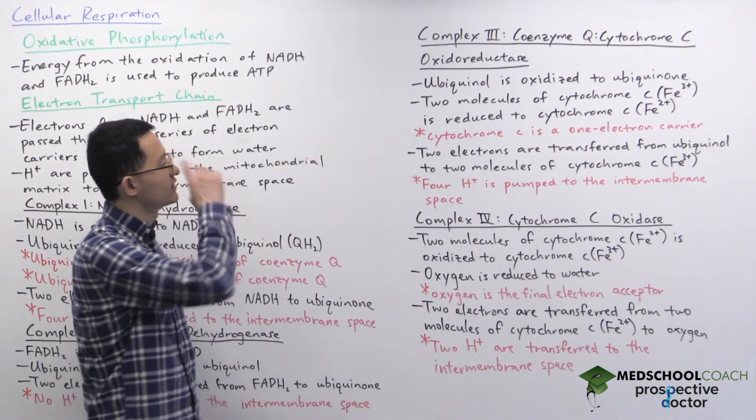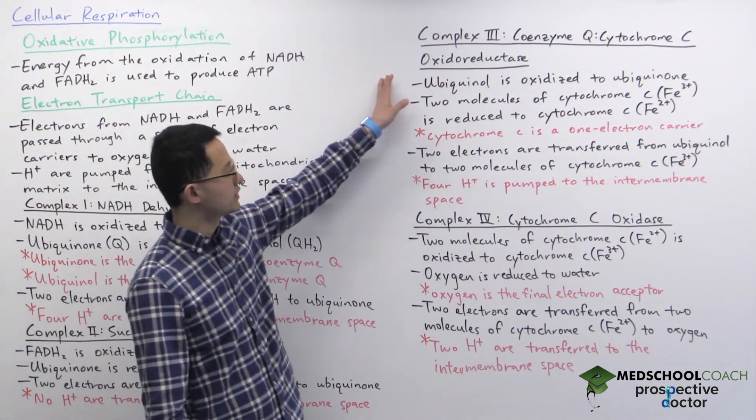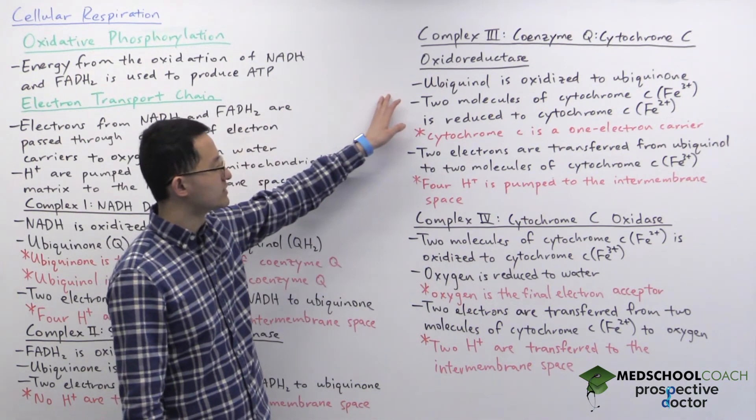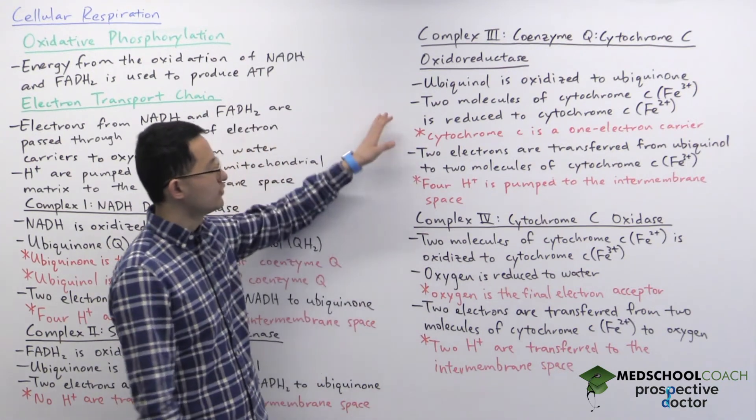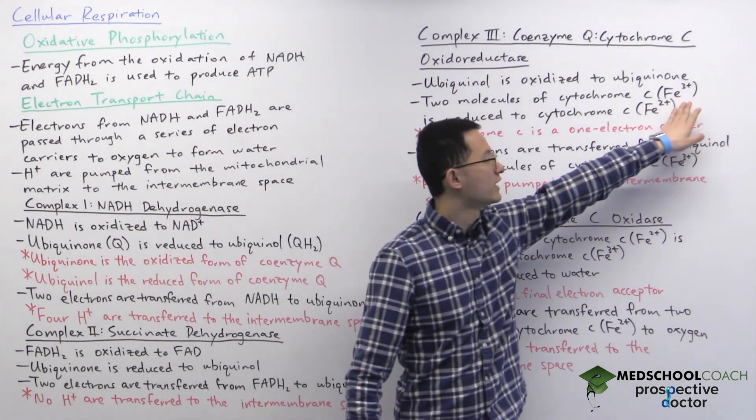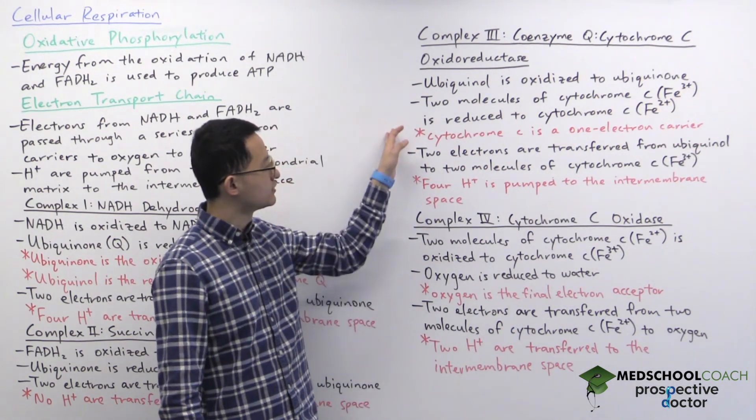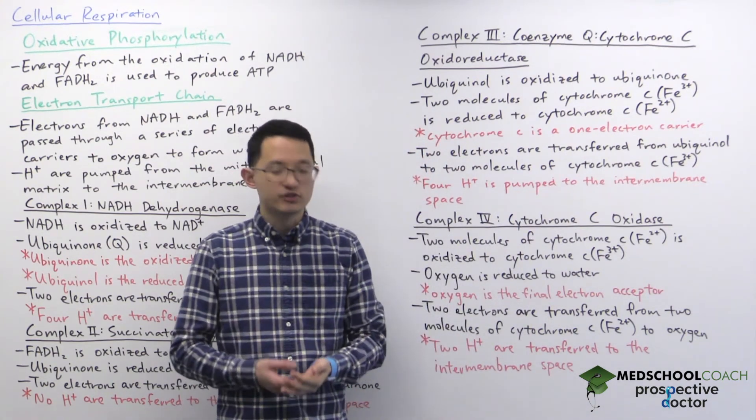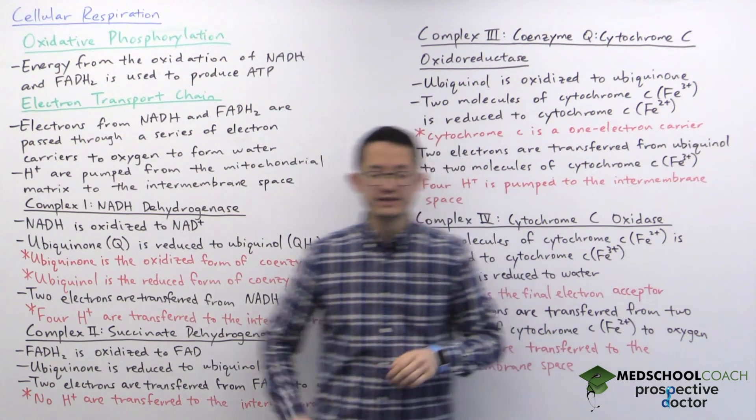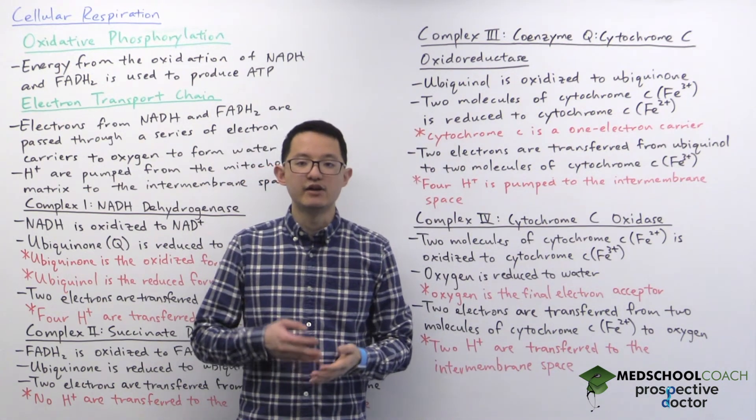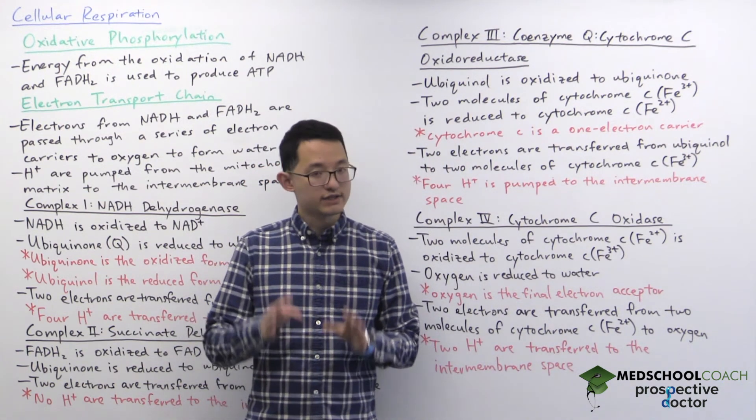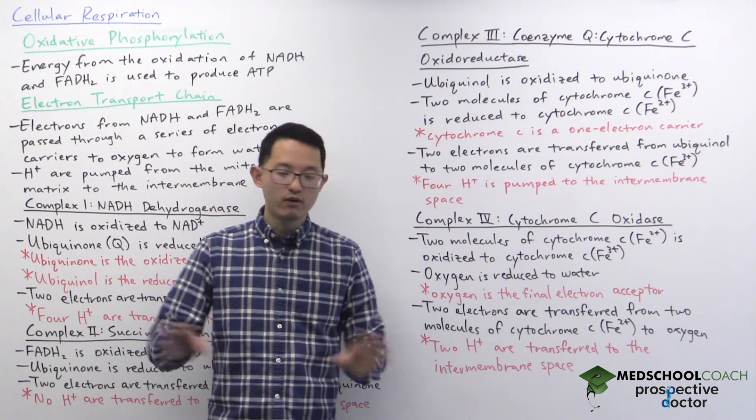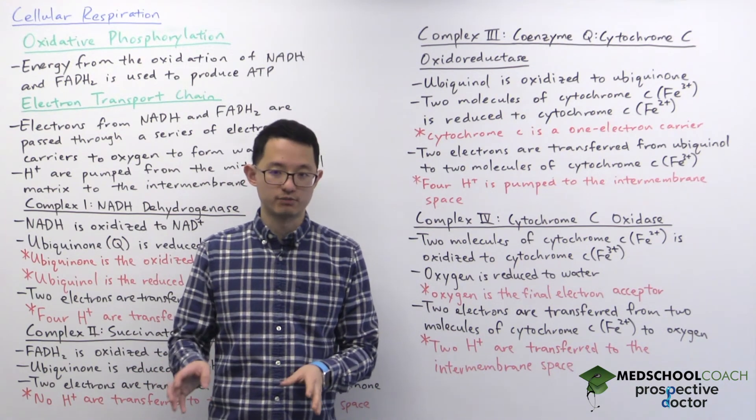Okay, so now let's look at complex 3, which is called coenzyme Q cytochrome C oxidoreductase. Here ubiquinol is oxidized to ubiquinone, and two molecules of cytochrome C in its iron 3+ condition is reduced to cytochrome C Fe2+. So you can see from the change in charge from Fe3+ to Fe2+ that each cytochrome C molecule is accepting one electron. And that's notable because that means that cytochrome C is a one-electron carrier, unlike all of the other electron carriers in the electron transfer chain.